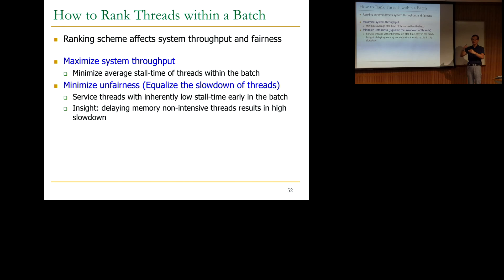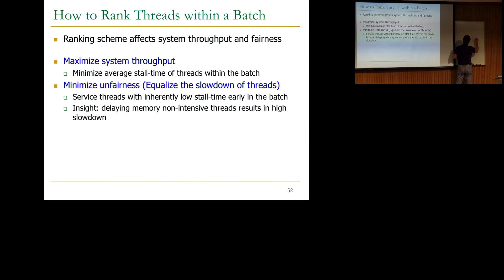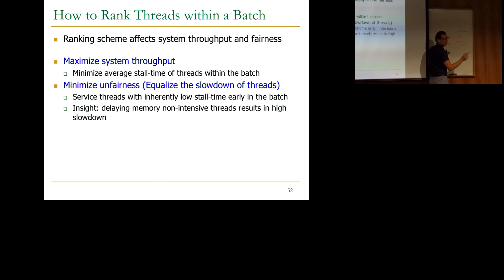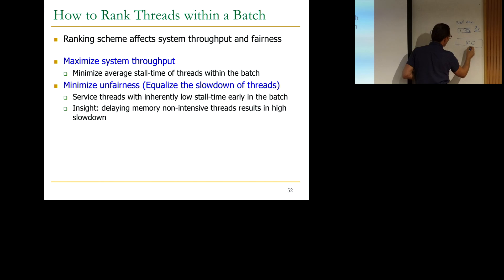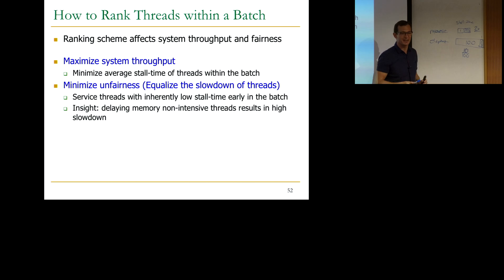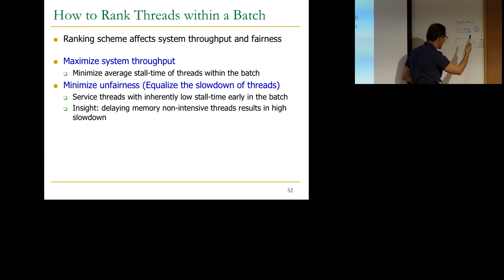Think of it this way — if you have a 'mouse' thread whose inherent stall time when running alone is 1, and an 'elephant' thread with stall time 100: if you delay the mouse by an additional 1, its slowdown is 2x. If you delay the elephant by an additional 1, its slowdown is 101/100 — barely anything. That's the insight: if you delay the elephant, it doesn't matter much; if you delay the mouse, you slow it down a lot.